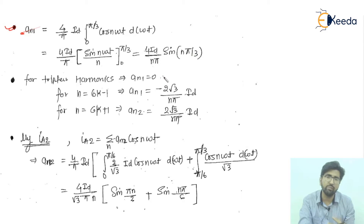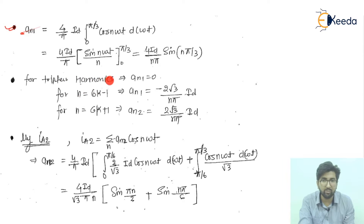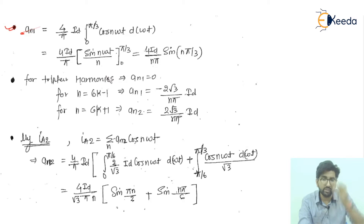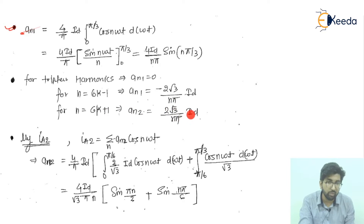According to the value of sin(nπ/3), we find different values of an1. For triplen harmonics — that is, n = 3, 6, 9 (n = 6k) — an1 = 0. For n = 6k − 1, an1 = −(2√3)/(nπ) · Id, and for n = 6k + 1, an1 = (2√3)/(nπ) · Id.